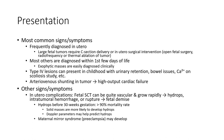Arteriovenous shunting within the tumor increases cardiac output, leading to high output cardiac failure. Other complications: in utero, fetal sacrococcygeal teratoma can be quite vascular and grow rapidly, leading to hydrops, intratumoral hemorrhage, or increased fetal demand. Hydrops before 34 weeks gestation carries more than 90% mortality rate. Mirror syndrome may also develop.